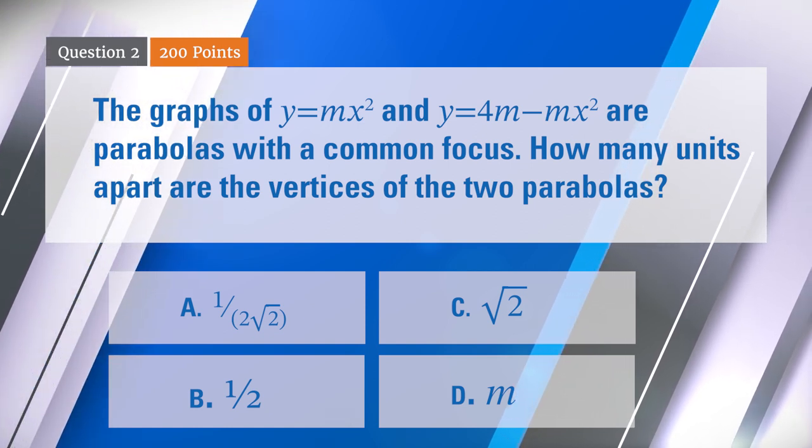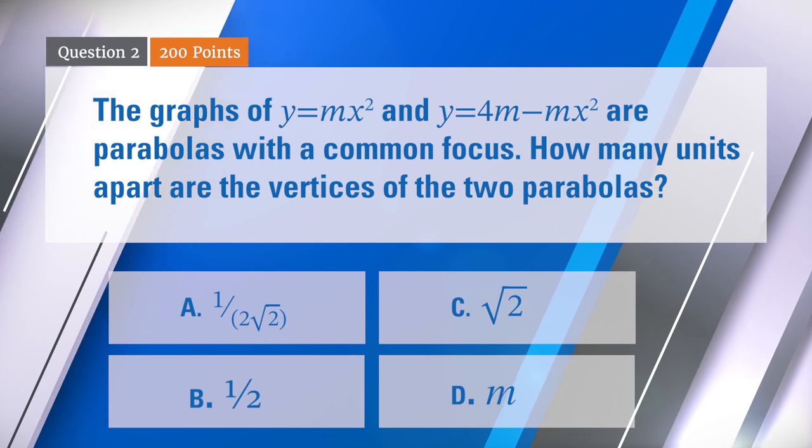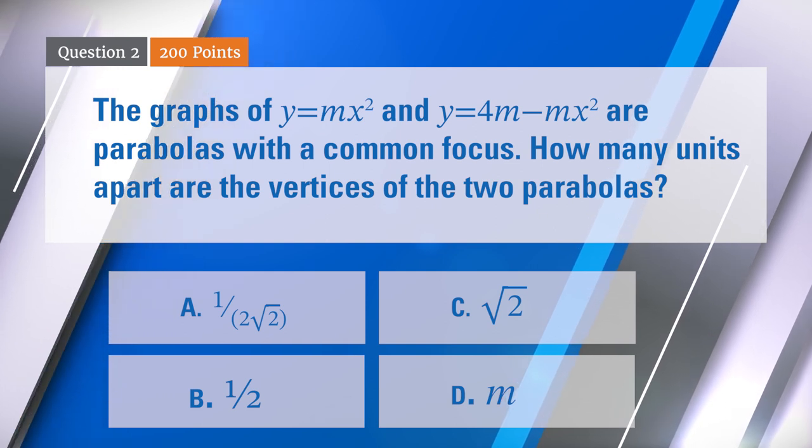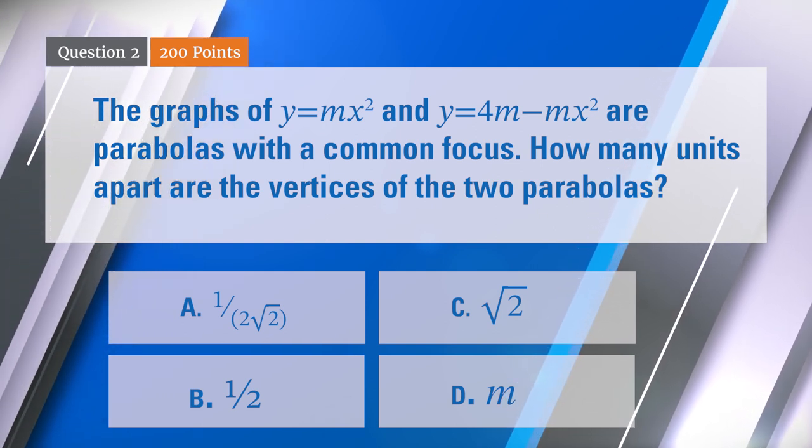Here are the choices: A) 1 over 2 square root of 2, B) 1 half, C) square root of 2, or D) m.